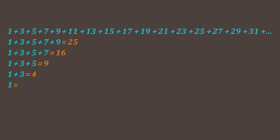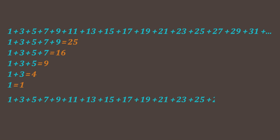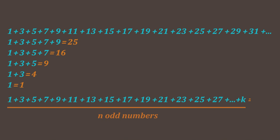In this video, we are going to look at what happens when we start adding up consecutive odd numbers starting at 1. We will notice that a pattern will emerge, and we will look at a way to prove that this pattern will hold true for summing up any amount of odd numbers starting at 1. To do this, we will have to use proof by induction.